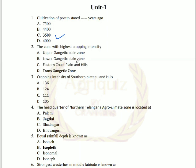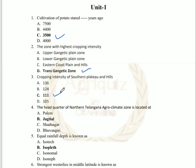The second question: the zone with highest cropping intensity is the Trans-Gangetic zone. And the third question: the cropping intensity of the southern plateau and hills is 111.